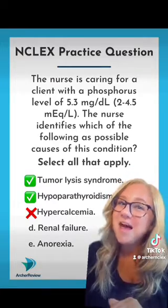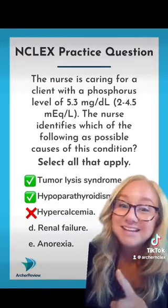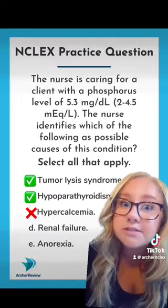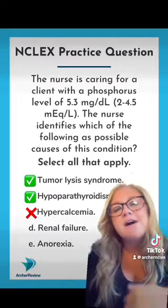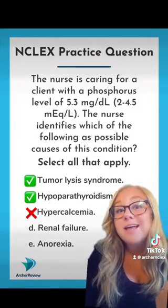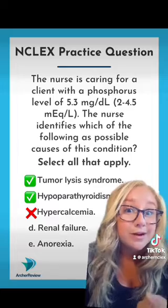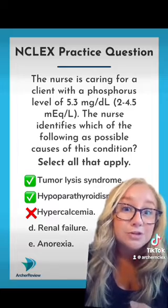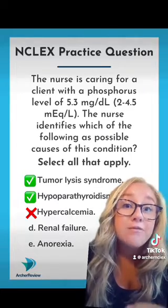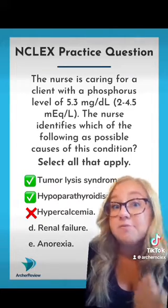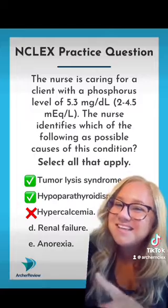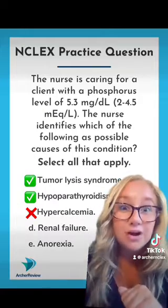And that means that C, hypercalcemia, must be false. Because if I have a high calcium level, and calcium and Phosphorus have an inverse relationship, then I wouldn't have high calcium and high Phosphorus at the same time. False — cross it off.